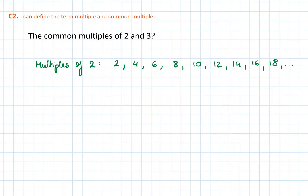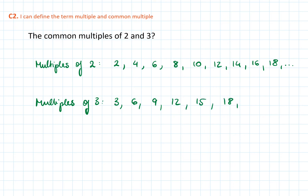So let's see what the multiples of 2 are. The first multiple of 2 is 2, and then 4, 6, 8, 10, 12, 14, 16, 18 and so on.